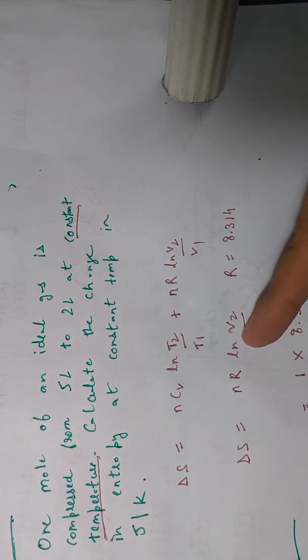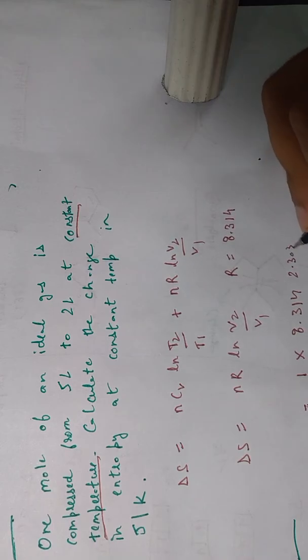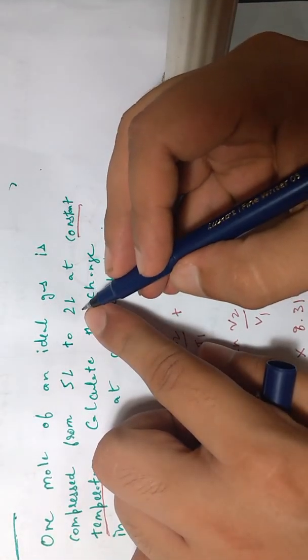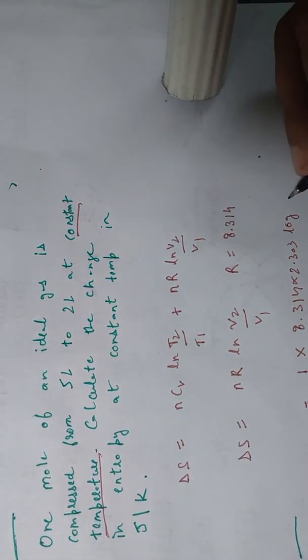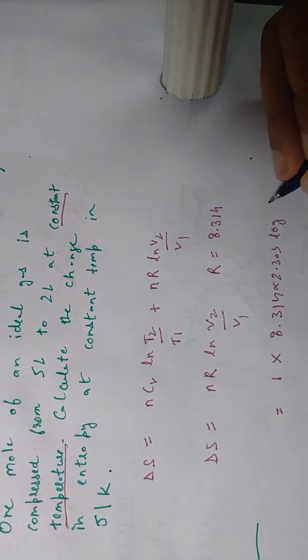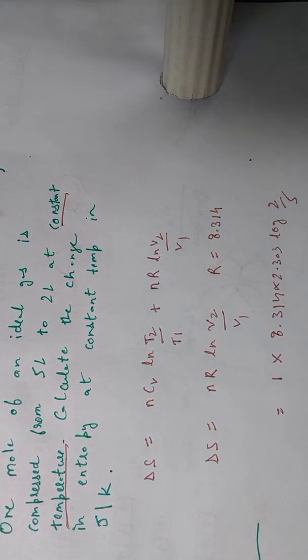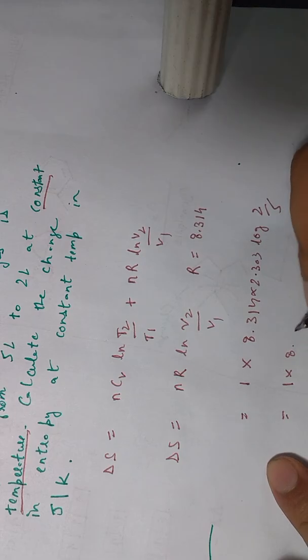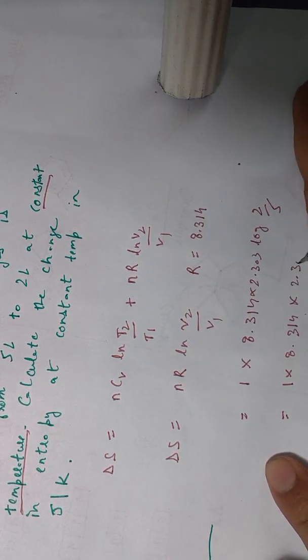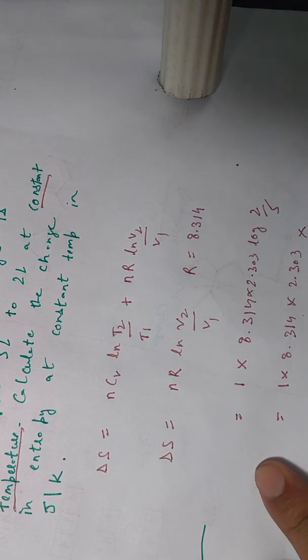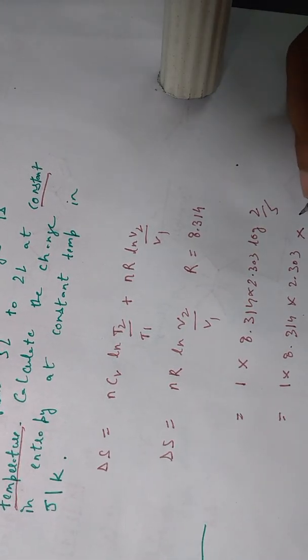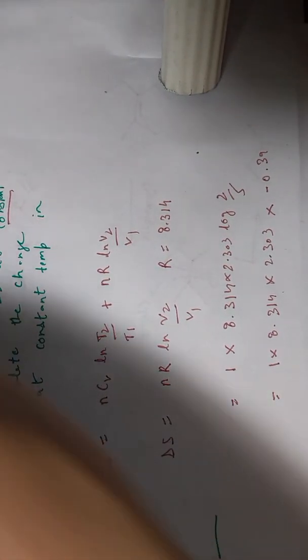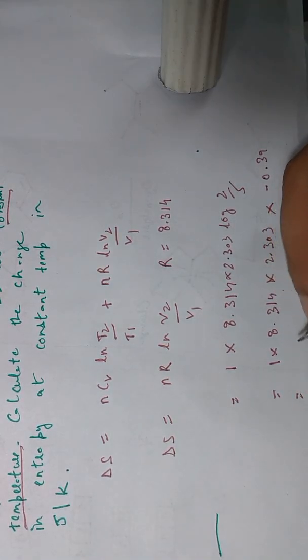We can write natural log as 2.303 times log of V2 by V1. V2 is the final volume which is 2, initial volume is 5. This equals 1 times 8.314 times 2.303 times log(2/5), which is log(0.4), approximately minus 0.39. Once you calculate this, it comes out to be minus 7.61 approximately, and this is the answer in joule per Kelvin.